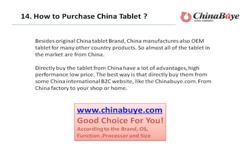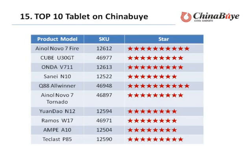How to purchase from ChinaBuy: besides original-chip tablet brands, China manufacturers also OEM tablets for many other countries' products. So almost all of the tablets in the market are from China. Directly buying tablets from China has many advantages: high performance, lower price. The best way is to directly buy from a China international B2C website like ChinaBuy — from the China factory to your door. Visit www.chinabuy for a good choice, filtering by brand, operating system, function, processor, and size.